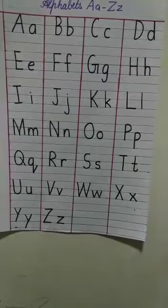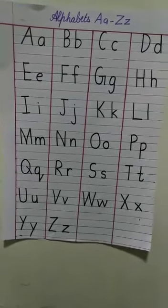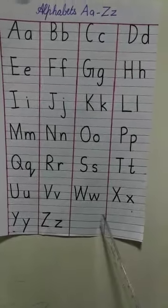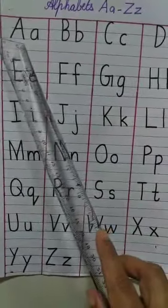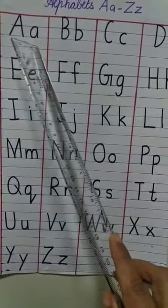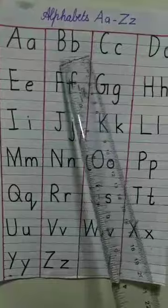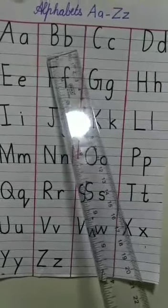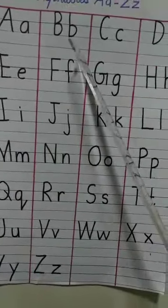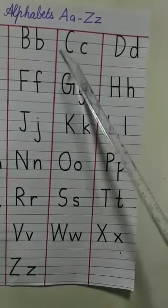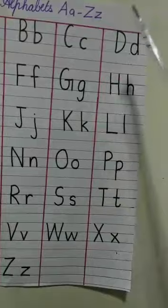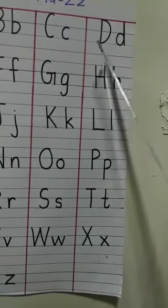So kids, here are your alphabets. Remember all this? What is this? A. This is capital A and small A. A for apple. Now what is this? B. B for ball, capital B, small b. This is C, C for cat, capital C, small c. This is D, D for doll, capital D, small d.